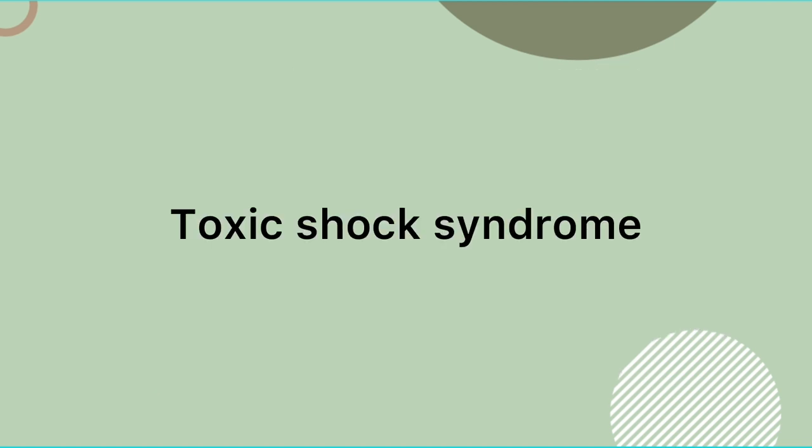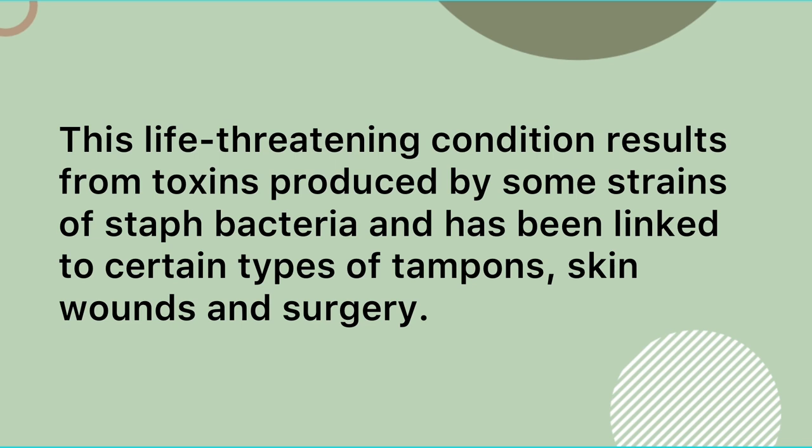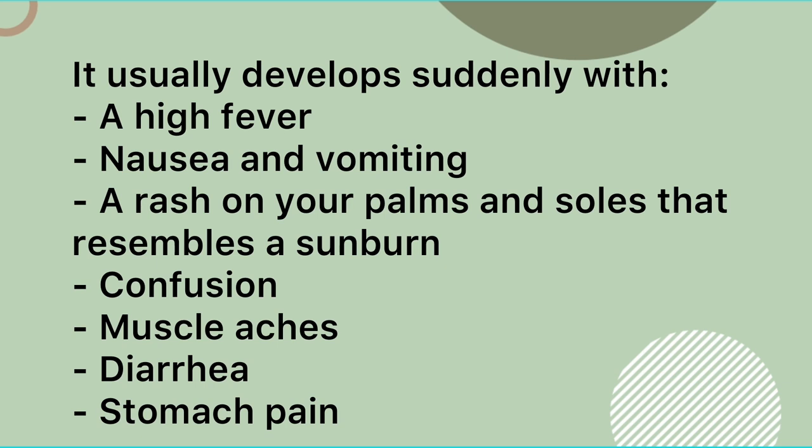The fourth symptom of staph infection we will be looking at is toxic shock syndrome. This life-threatening condition results from toxins produced by some strains of staph bacteria and has been linked to certain types of tampons, skin wounds, and surgery. It usually develops suddenly with a high fever, nausea and vomiting, a rash on your palms and soles that resembles a sunburn, confusion, muscle aches, and diarrhea.